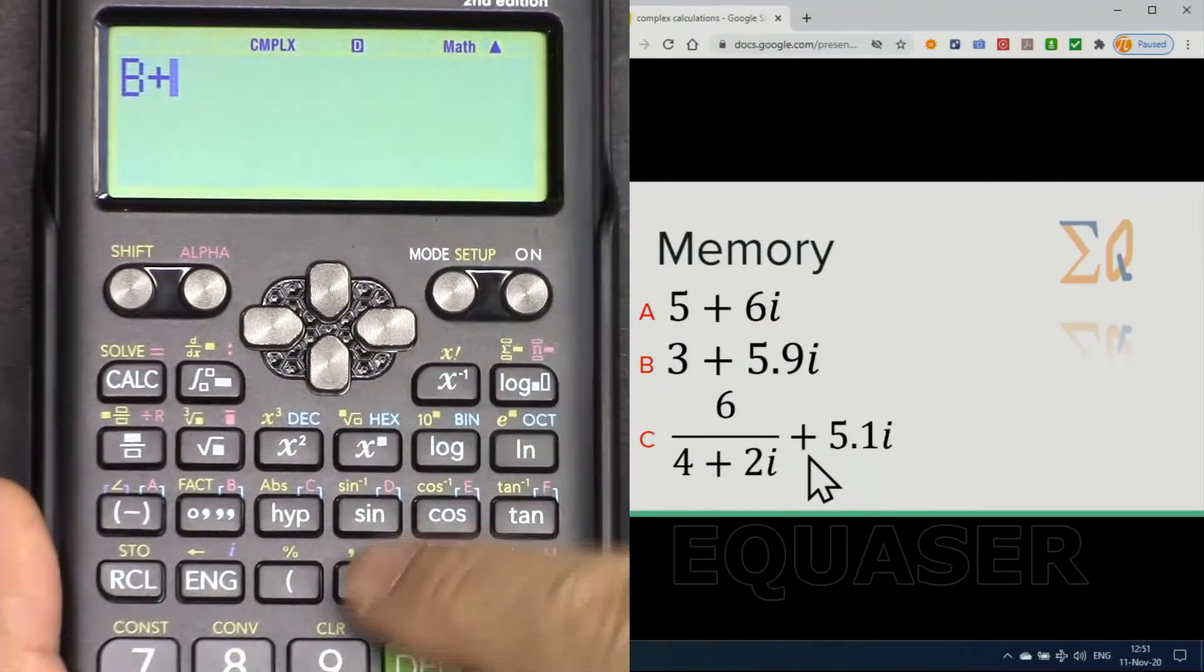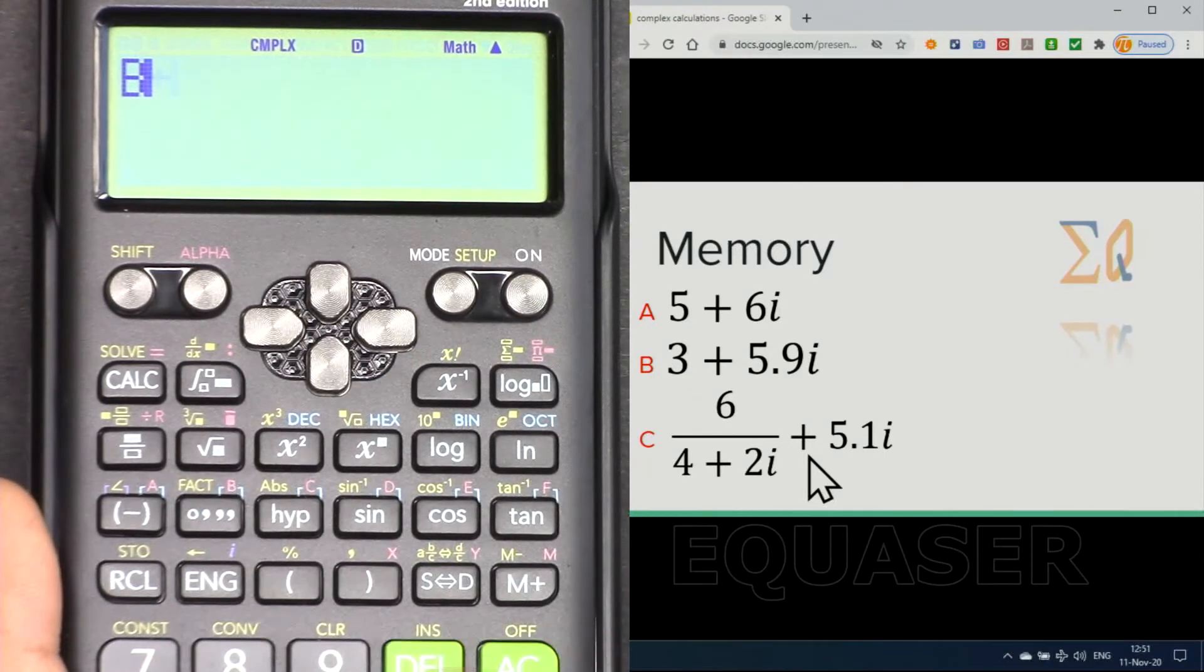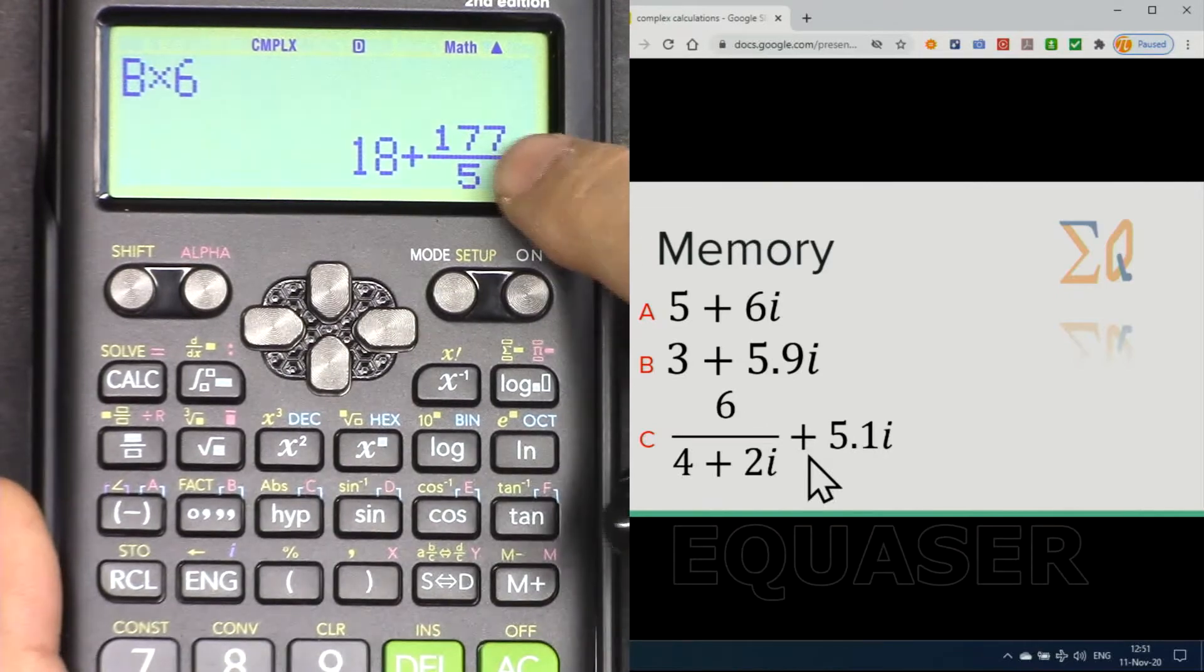Here you can multiply it, for example, multiplied by 6, and this is the value.